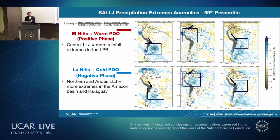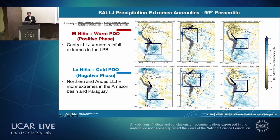Looking at precipitation extremes anomalies at the 99th percentile: during the positive phase, when the central jet is more dominant, there are more extreme rainfall events in the La Plata Basin. When northern and Andes jets are more dominant during cold phases, they transfer moisture into the western Amazon Basin and Paraguay, where we see more precipitation extremes.